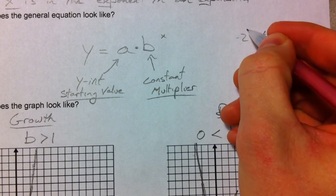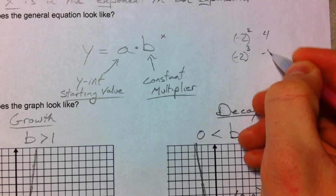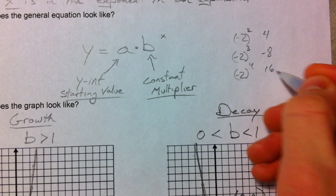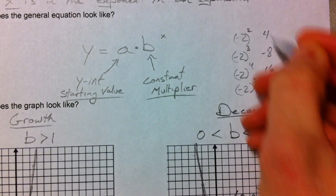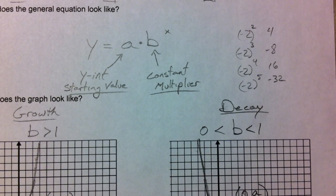negative 2 cubed is negative 8. Negative 2 raised to the 4th is positive 16. Negative 2 to the 5th is negative 32. And so, it's going to be flip-flopping from positive to negative. And so, that's going to be where it's not really going to be growth or decay.